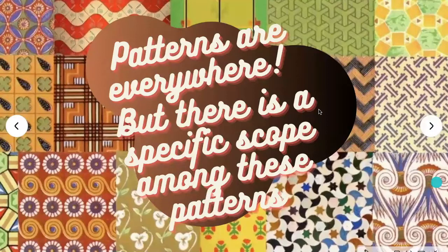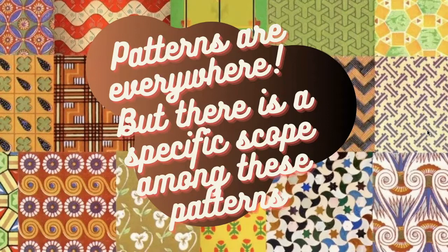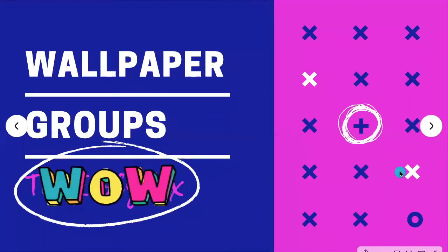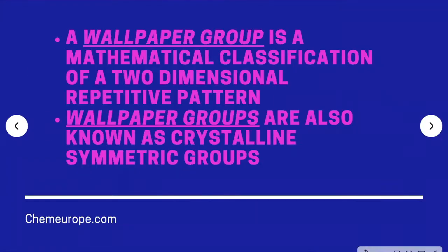It may be some type of design aesthetic or a method on how the artist creates the pattern. As we say, patterns are everywhere, but there is a specific scope among these patterns. By looking at these patterns, we may recognize the stroke or the creative imagery of the artist. These patterns have a known scope and a name — they are called wallpaper groups. A wallpaper group is a mathematical classification of a two-dimensional repetitive pattern, also known as crystallographic symmetric groups.